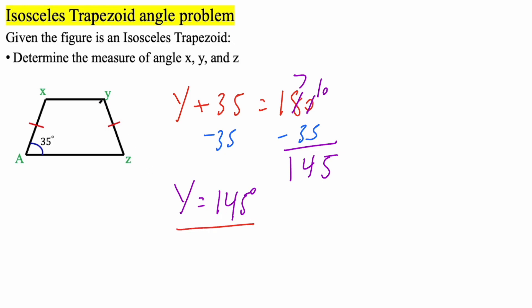And now for the easy part. So this is 145 degrees, this right here is also 145 degrees. And if this is 35 degrees, this right here is also 35 degrees.